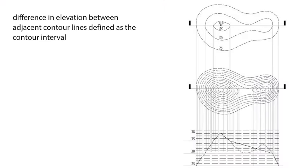The difference in elevation between adjacent contour lines is defined as the contour interval. In order to interpret a topographic map properly, the scale, direction of slope, and contour interval must be known.